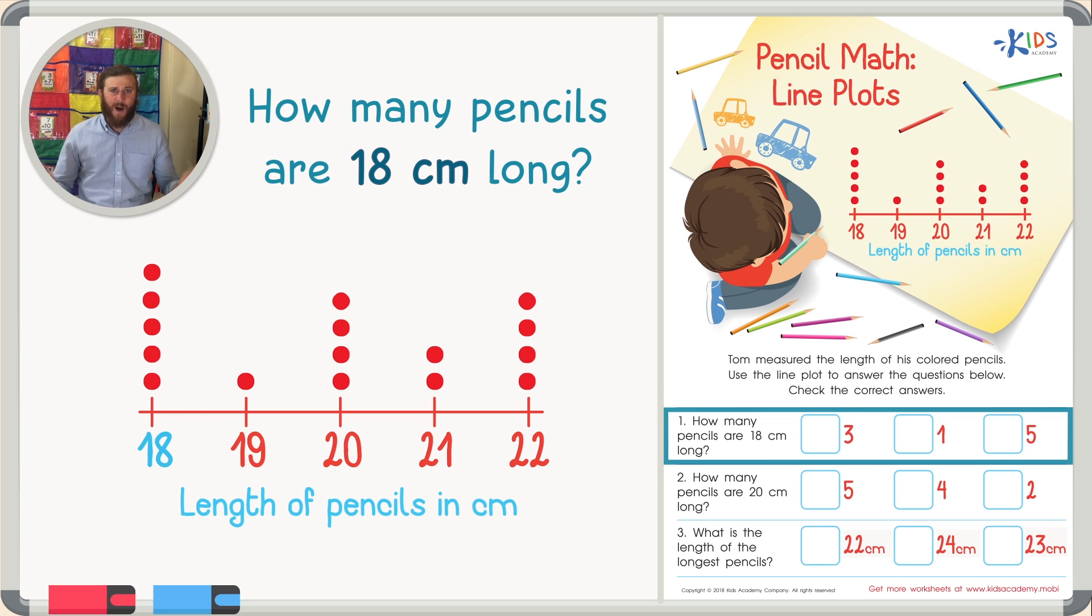To figure out how many pencils are 18 centimeters long, we just have to count the dots that are above 18. Let's count them together. There are one, two, three, four, five dots, meaning that there are five pencils that are 18 centimeters long. Let's go ahead and check five.